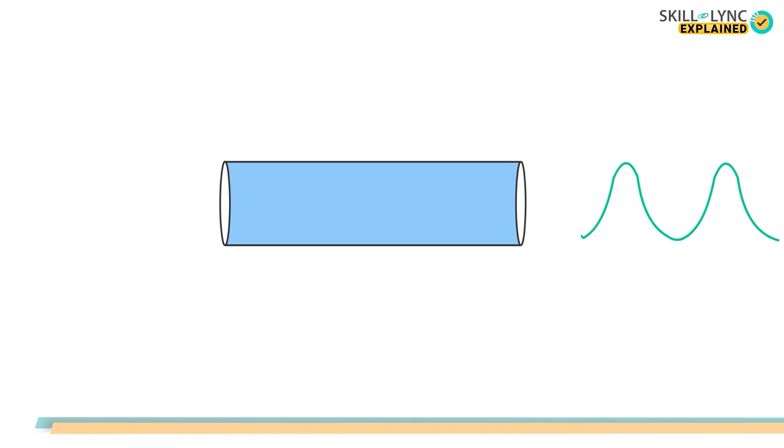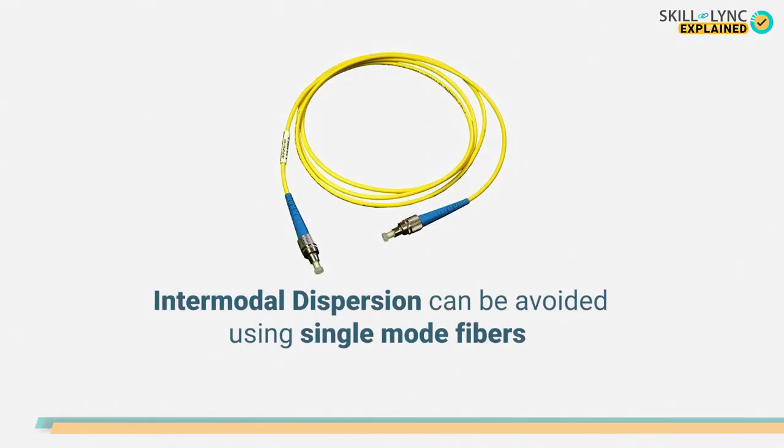Intermodal dispersion is observed in multi-mode fibers. One way of avoiding intermodal dispersion is by using single mode fibers.